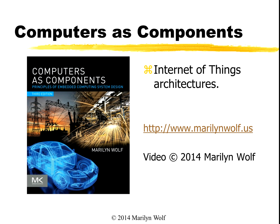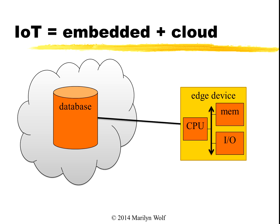Let's look in a little more detail at how the Internet of Things works. As we saw, the Internet of Things is smart edge devices with their own processors and I/O, connected to databases and processing servers in the cloud.